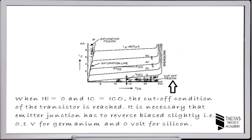The second region is the cutoff region. When the emitter current is equal to zero and the collector current is equal to ICEO, the cutoff condition of the transistor is reached. It is necessary that the emitter junction be reverse biased slightly — 0.1 volt for germanium and zero volt for silicon. In this region, the base current is equal to the negative of the collector current and also equal to the negative of the ICO current.